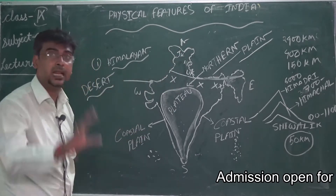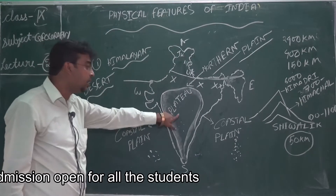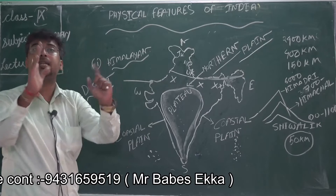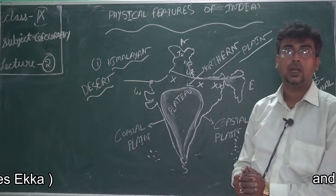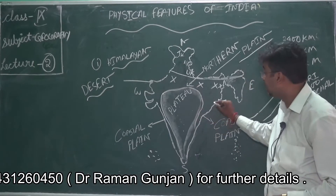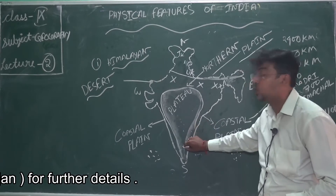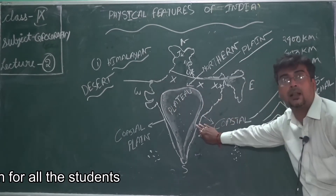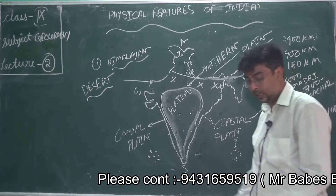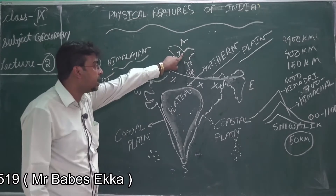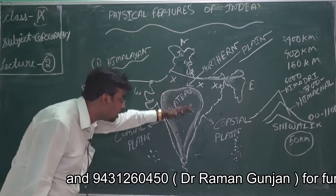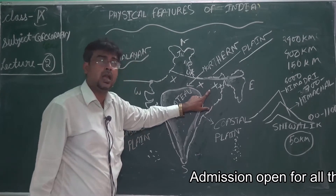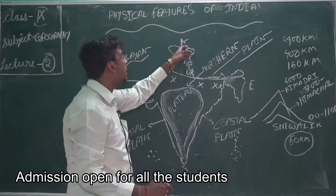Next we talk about a very important feature — the plateau, also known as the peninsular plateau. South India is a plateau area, also Jharkhand, Odisha, Andhra Pradesh, Tamil Nadu, Kerala, Karnataka, Goa, Maharashtra, Chhattisgarh, Madhya Pradesh — all are a huge area. So the three very important physical features so far: one is mountain area, second is northern plain, third is plateau.